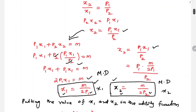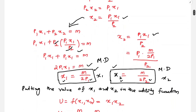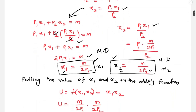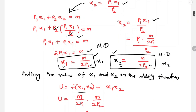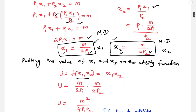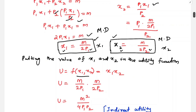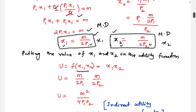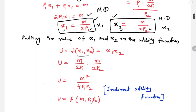Next, putting the values of x1 and x2 into the utility function: U = x1 · x2 = [M/(2p1)] · [M/(2p2)] = M² / (4·p1·p2). This is the indirect utility function.